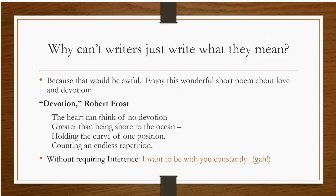So let's take a look at this little poem. It's called 'Devotion' by Robert Frost. It says: 'The heart can think of no devotion greater than being sure to the ocean, holding the curve of one position, counting an endless repetition.' With inference, we understand this is about the ocean and the shore — how the shore is always next to the ocean, even though it recedes at low tide, comes back at high tide, and they go together. That love is like that: it may ebb and flow, but it's always there, it's constant. Without inference, all we get is: 'I want to be with you constantly' — which is horrible. Inference makes things interesting. The second version looks like a stalker; this poem is love. This is just creepy.